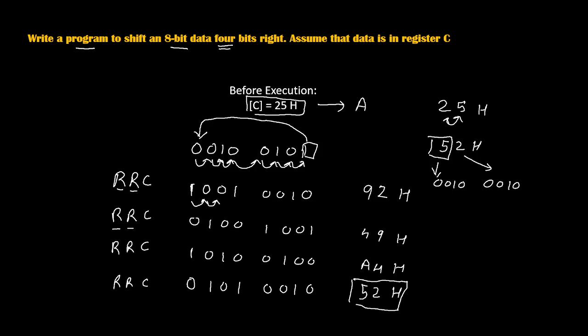So this is our technique: first we will take the data inside the accumulator, then we will rotate it 4 times. Let's now write the program.